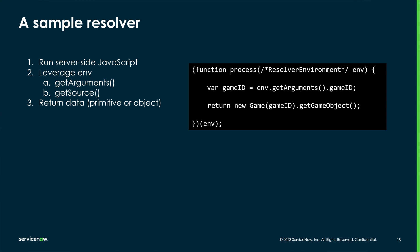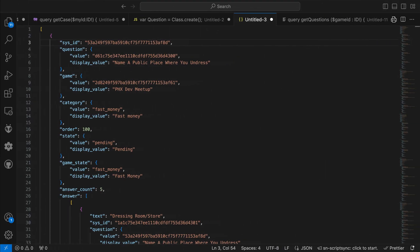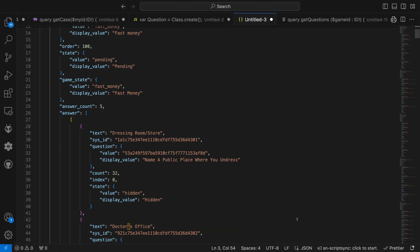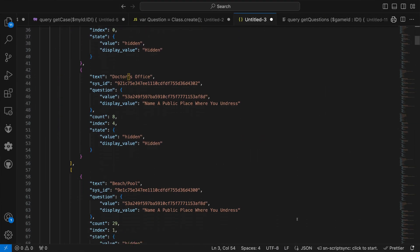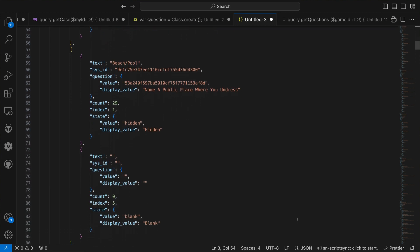We're free to add additional JavaScript code, such as this example. Here we're using the env.getArguments method to get access to the GameId parameter as defined by the schema and passed from the client. That's then passed to a ScriptInclude which does what it needs in the GetGameObject function to return an appropriate object, again defined by the schema. While the resolver may return a large amount of data, the client query defines which fields or properties it actually wants, almost like a filter.